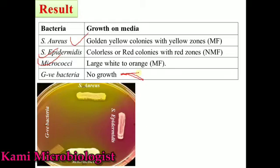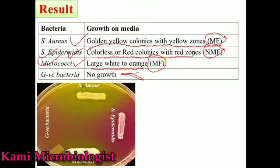Only Staphylococcus aureus, which is a member of ESKAPE pathogens, can easily grow on this media. Staphylococcus aureus produces golden yellow colonies with a yellow zone, indicating it is a mannitol-fermenting bacterium. Staphylococcus epidermidis produces colorless or red colonies with a red zone, indicating it is non-mannitol-fermenting. Micrococcus luteus produces large white to orange colonies, indicating it is mannitol-fermenting. Gram-negative bacteria will not grow.